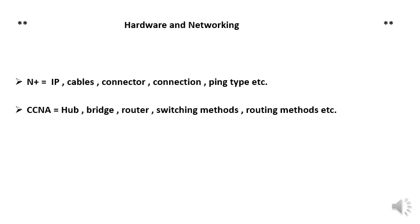The next topic is switching. Switching means connecting multiple computers within one network. There are various types — for example, VLANs in switching. CCNA also covers routing methods: dynamic and static routing are the two common types, and among those there are protocols like RIPv2, EIGRP, and OSPF — many routing types and methods covered in that session.